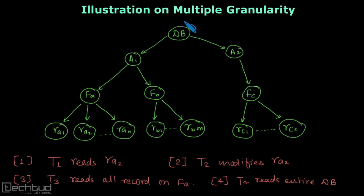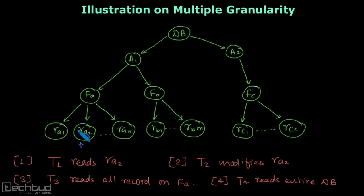We are following the multiple granularity protocol. The first thing: transaction T1 wants to read record RA2. In order to read this item, the transaction needs to obtain a shared lock. But before it obtains a shared lock here, it needs to travel from the root to this node and check whether some node is locked in this path. If it is not, then it has to acquire intention mode locks to indicate that at a lower level, some explicit shared lock is being obtained.